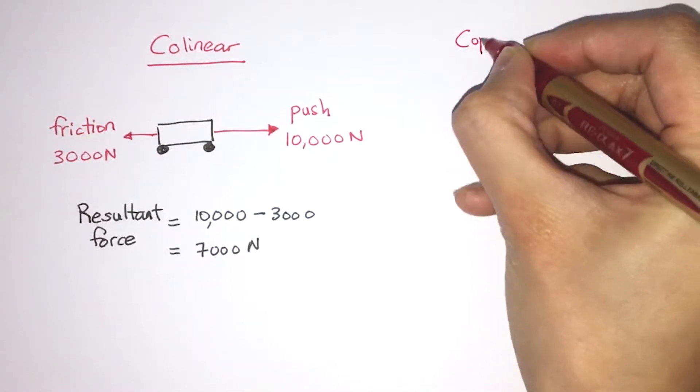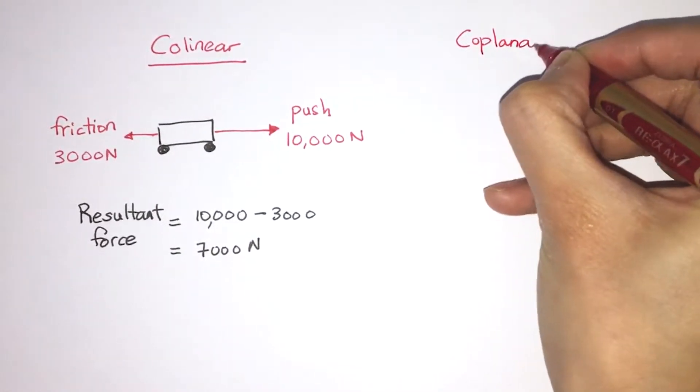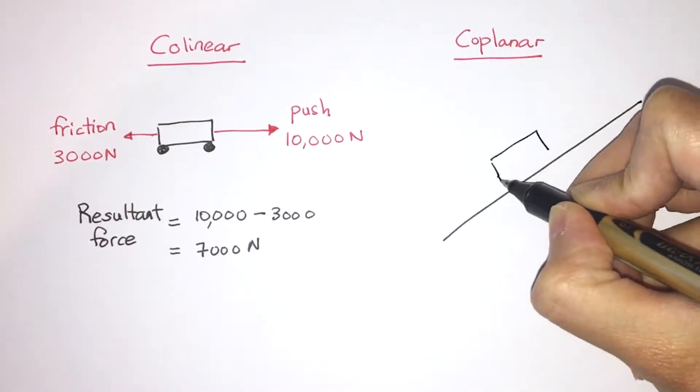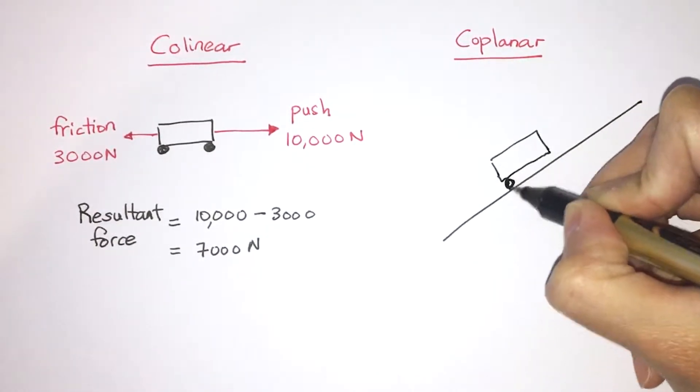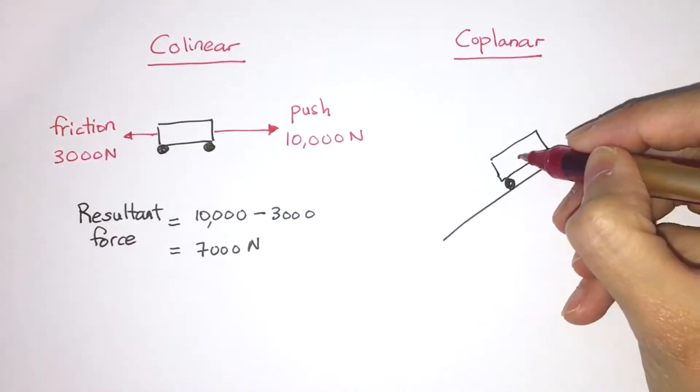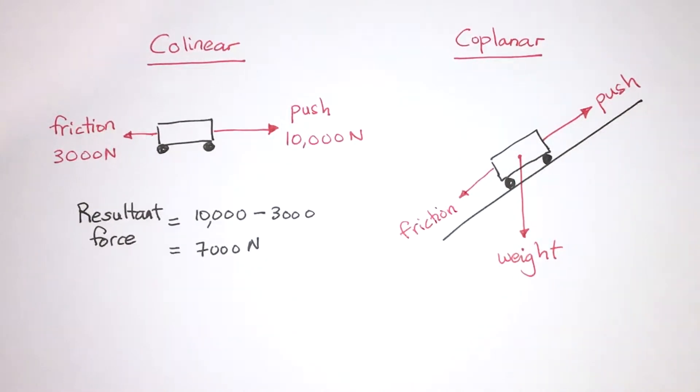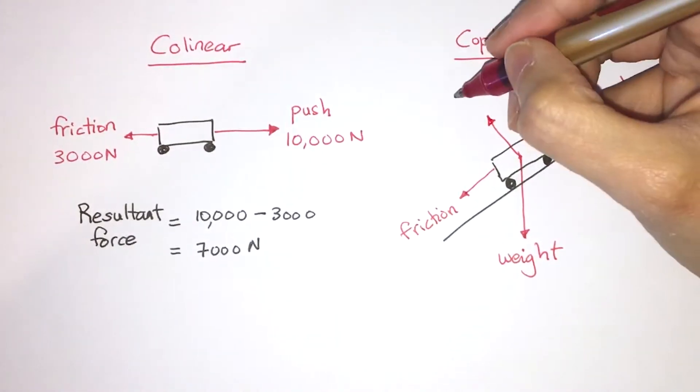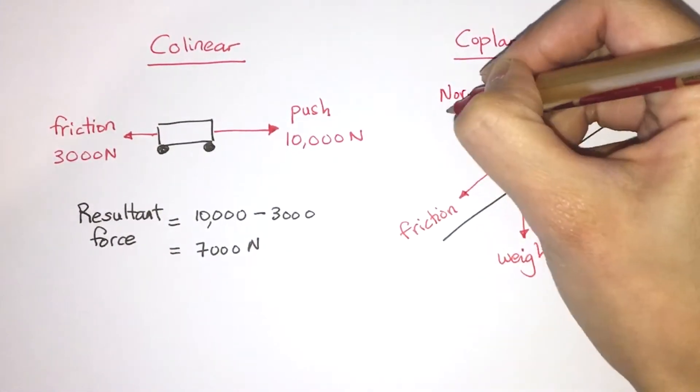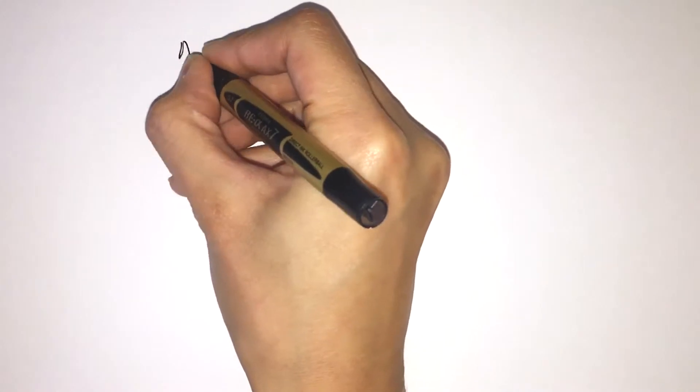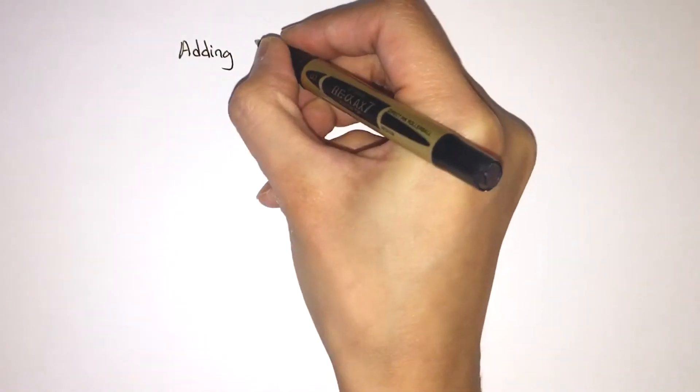But when you have coplanar forces that are not collinear, it complicates things a little bit. So here's a coplanar situation where you have a car being pushed uphill and you have weights acting downwards towards the center of the earth. You have the push, you have the friction, you have the normal reaction force between the wheels and the slope. You have all of these forces acting on it. So even if you don't have forces that are acting parallel to each other, you still need to know how to add them together.